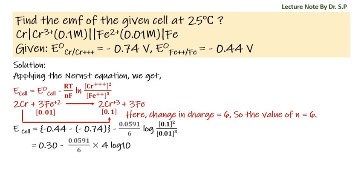Now emf of given cell is equal to 0.30 minus 0.0591 by 6 into 4 log 10. Here the value of RT by F into 2.303 is 0.0591, so we wrote the value 0.0591 in place of RT by F into 2.303 in Nernst equation.